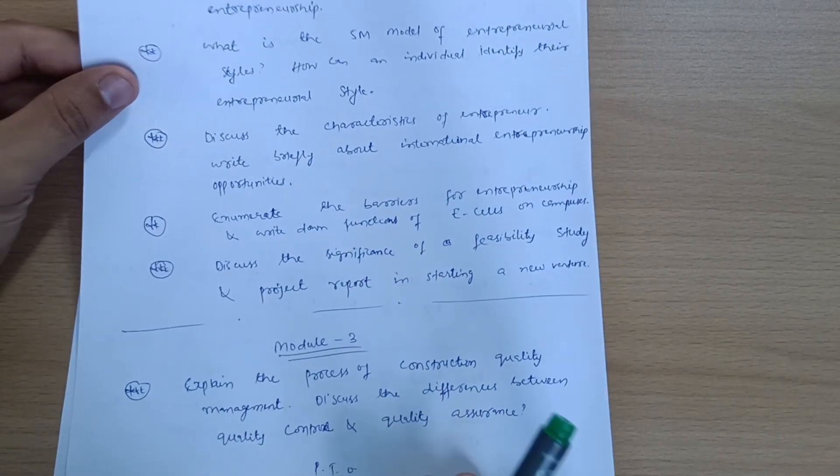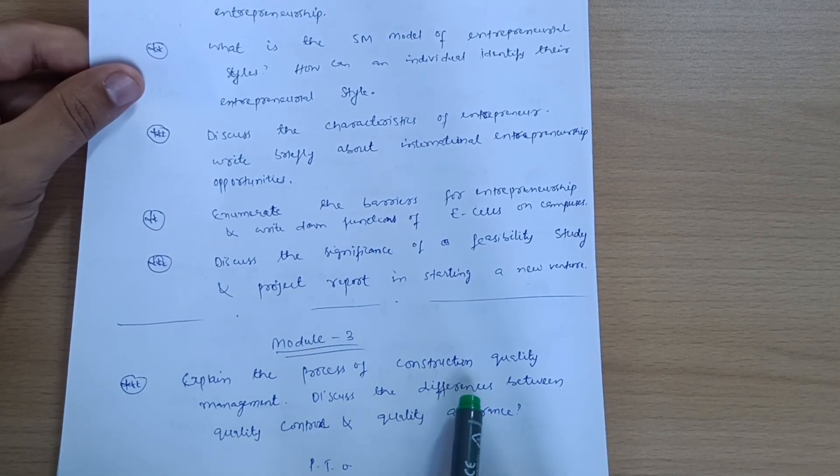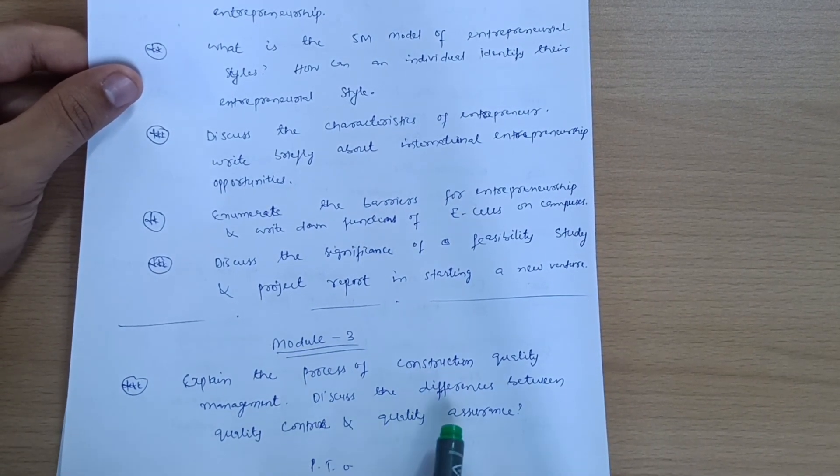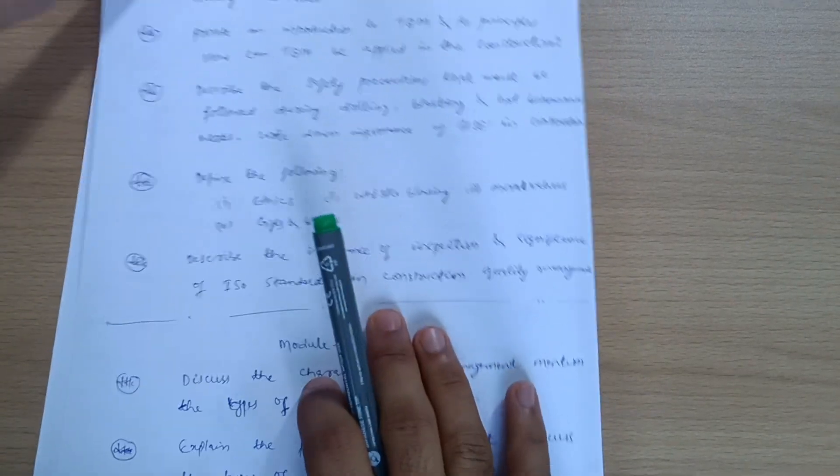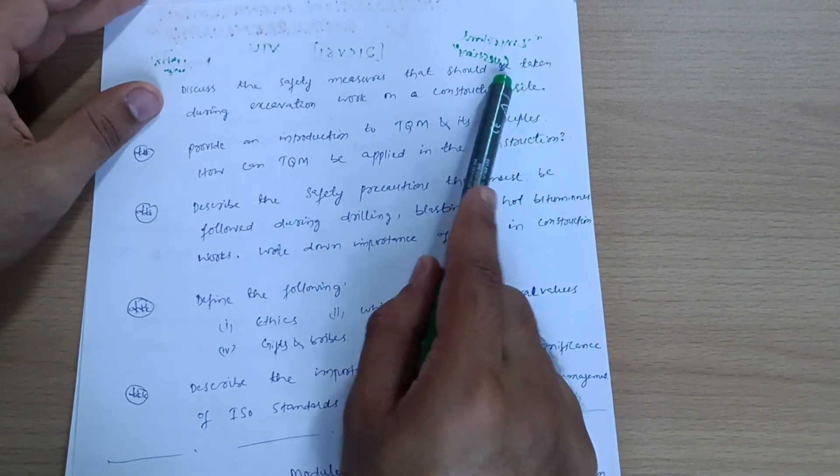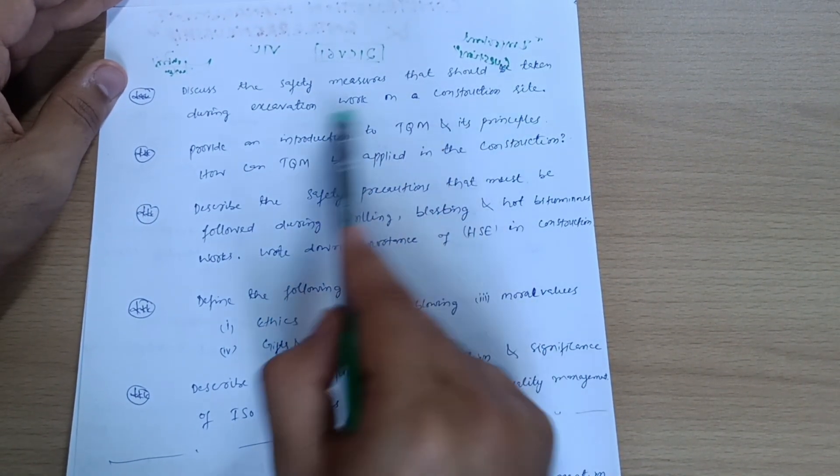Next is Module 3. Explain the process of construction quality management. Discuss the differences between quality control and quality assurance. This is number one. Next is, discuss the safety measures that should be taken during the excavation work on a construction site.